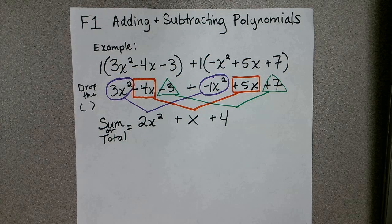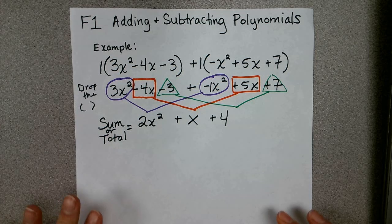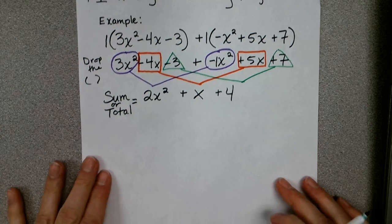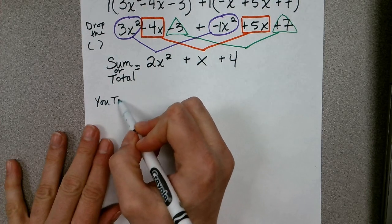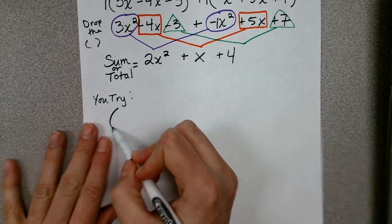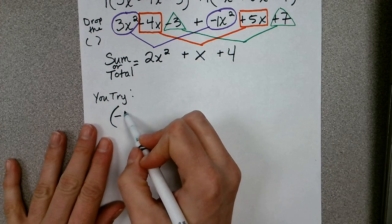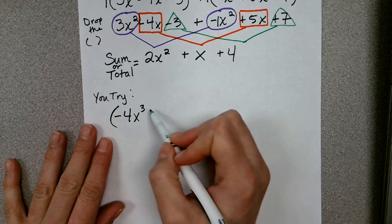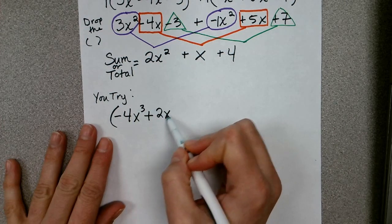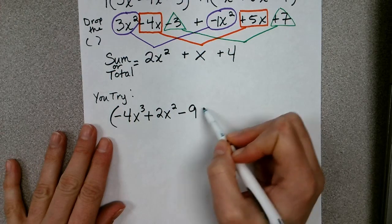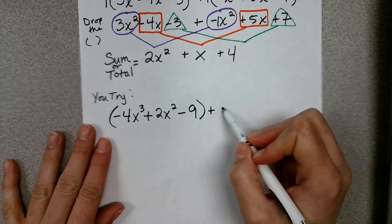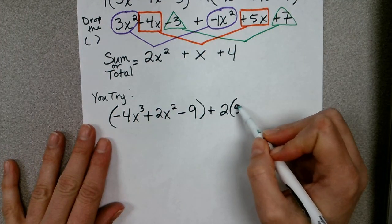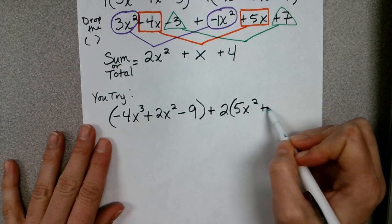All right, let's go ahead and give you a problem that you can try on your own. So this time I'm going to have you try this one. We have in parentheses: negative 4x³ + 2x² - 9, plus 2 times (5x² + 4).